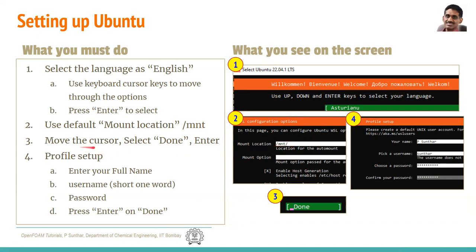To navigate, you have to use the keyboard cursor keys — up, down, left, right — to move your cursor. Once you make all your selections, at the bottom you will see a 'Done' section. When the cursor comes to the bottom 'Done' section, it will change to green. When it changes to green, you can hit Enter and the settings will get accepted.